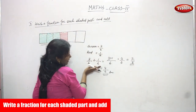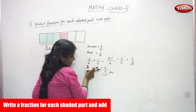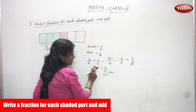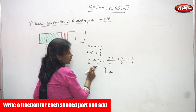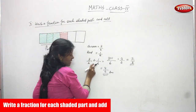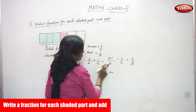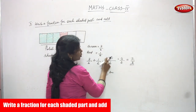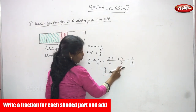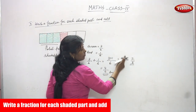In addition of like fractions, first check the denominator. If the denominators are the same, write the denominator only one time and add the numerators. Three plus one gives four, so the answer is four by six.